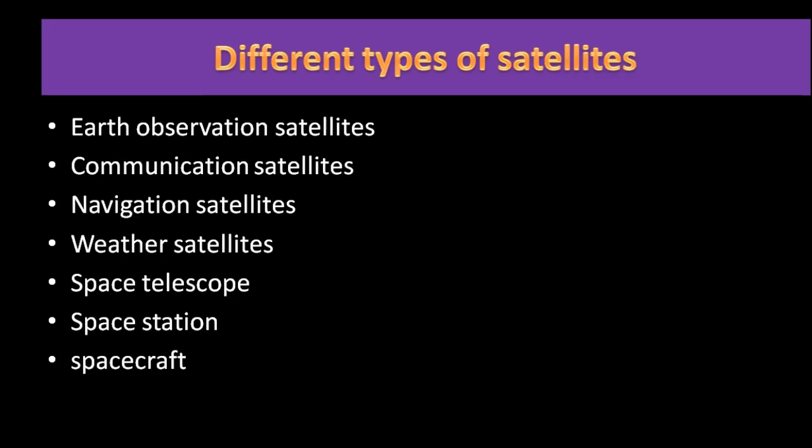Communication satellites are satellites spaced in orbit around the Earth to relay television, radio, and telephone signals. They create a communication channel between a source and a receiver at different locations on Earth, and are used for television, telephone, radio, internet, and military applications.